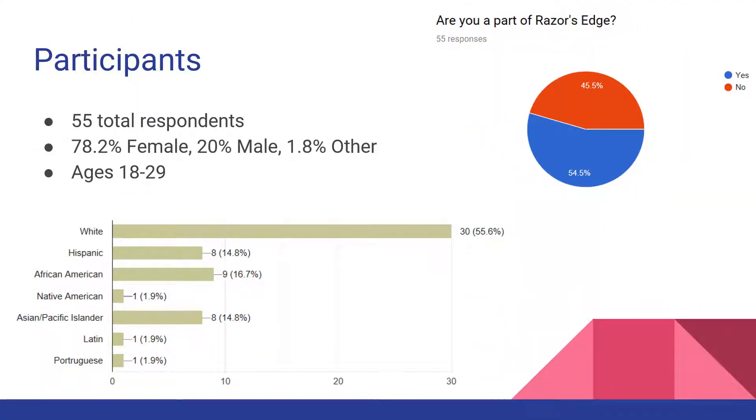We had 55 total respondents but we only ended up using 49 after excluding some participants that were extreme outliers or they had insufficiently completed one of the portions of the survey. 78% were female while 20% were male and we had about 2% who identified as other genders. The participants were aged 18 to 29.